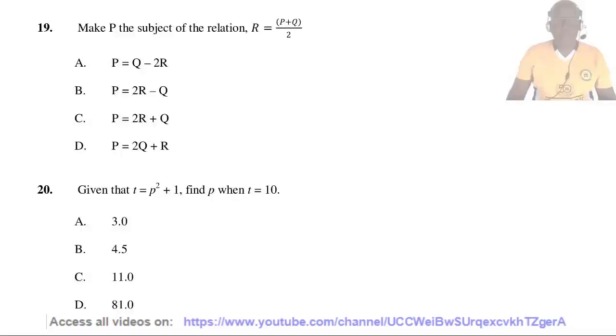Question 19. Make P the subject of the relation R = (P + Q)/2. We shall multiply both sides by 2 to eliminate the fraction. This gives 2R = P + Q. We shall send Q to the other side of the equation, so 2R - Q = P, or P = 2R - Q. So the answer is B.